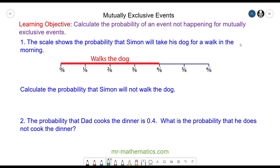In the case of question one, the scale shows the probability that Simon will take his dog for a walk in the morning. He cannot do them both. He will either walk his dog or he will not.